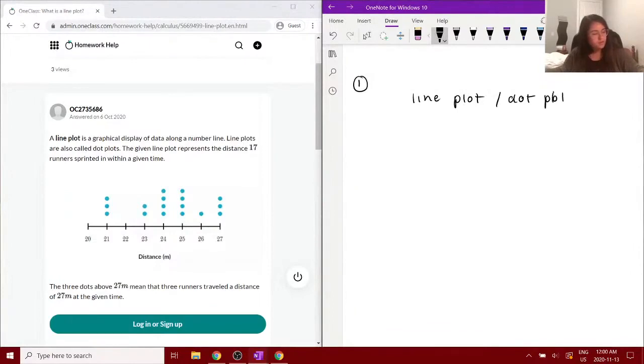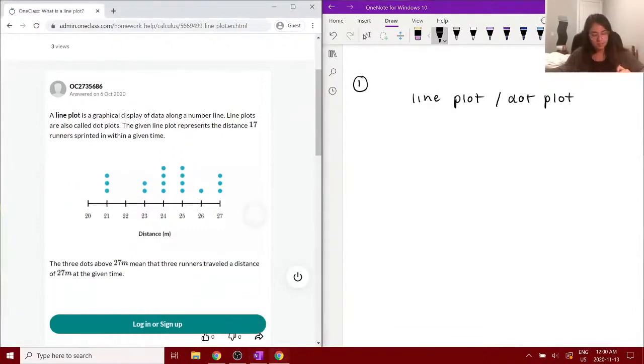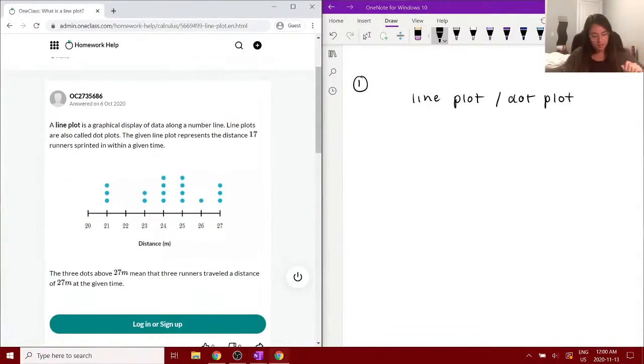In this example here, you can see that the line plot shows the distance from 20 meters to 27 meters, and it has 17 different dots spread out throughout the diagram. I'll just draw something similar.